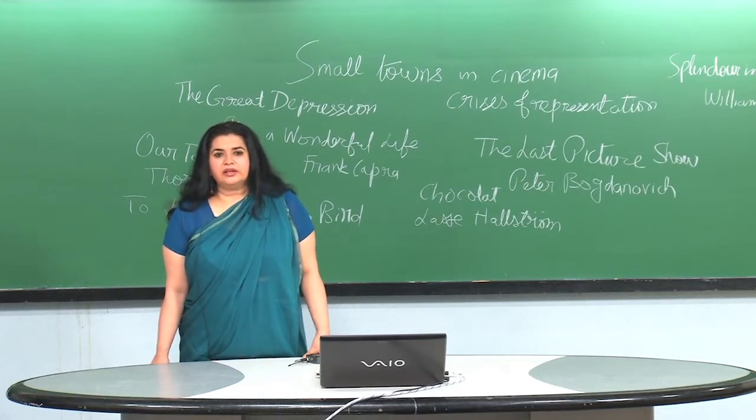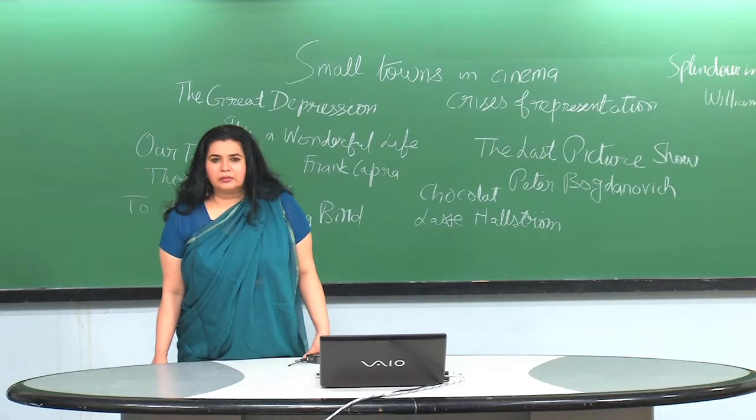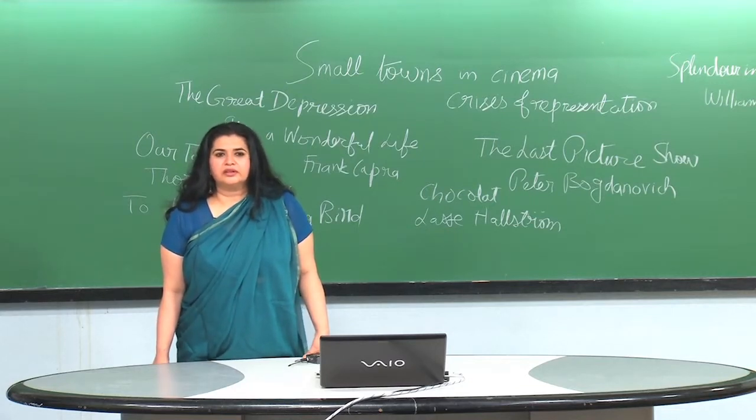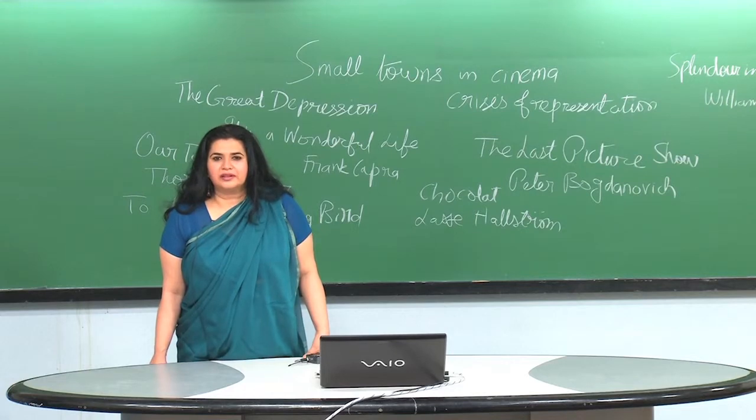As we know that early American cinema, we are basically going to talk about European and American cinema and how small town was represented here. Early in the American cinema, they portrayed cities as centers of moral decadence and decay, moral pestilence.